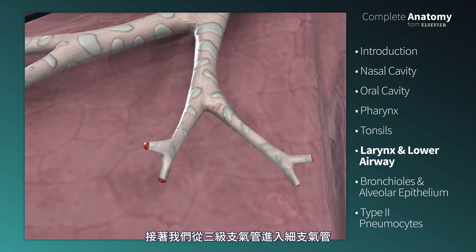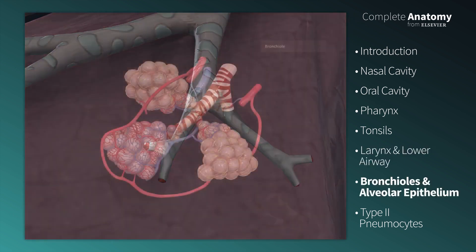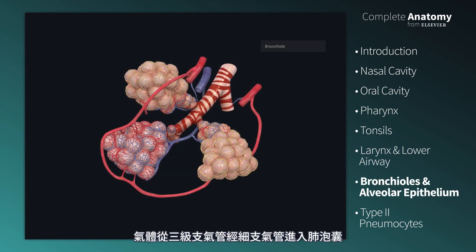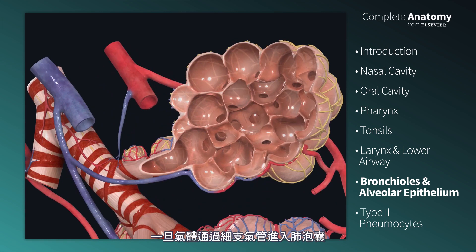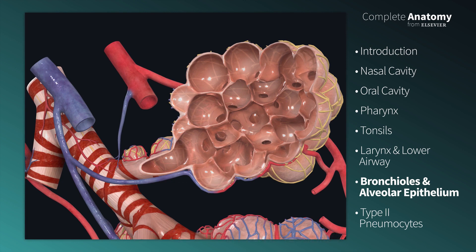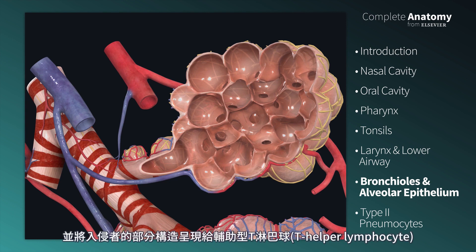Now we will move from the tertiary bronchi into the bronchioles. Air moving from the tertiary bronchi into the alveolar sacs passes through the bronchioles. Once air passes the terminal bronchioles into the alveolar sacs, the last line of cellular defense is comprised of dust cells. These are resident macrophages whose job is to phagocytose foreign invaders, then present parts of the invaders to T helper lymphocytes.